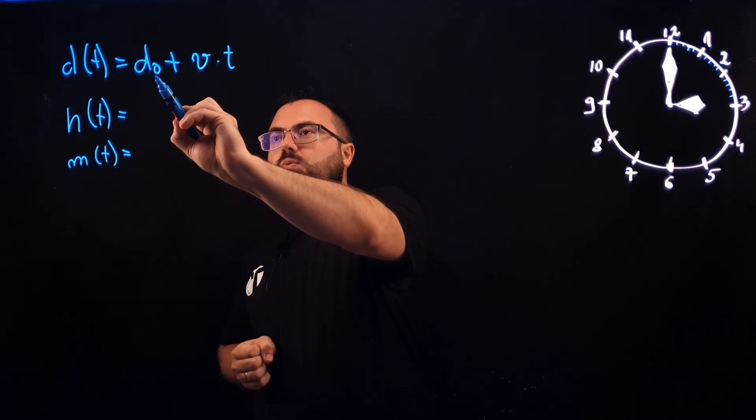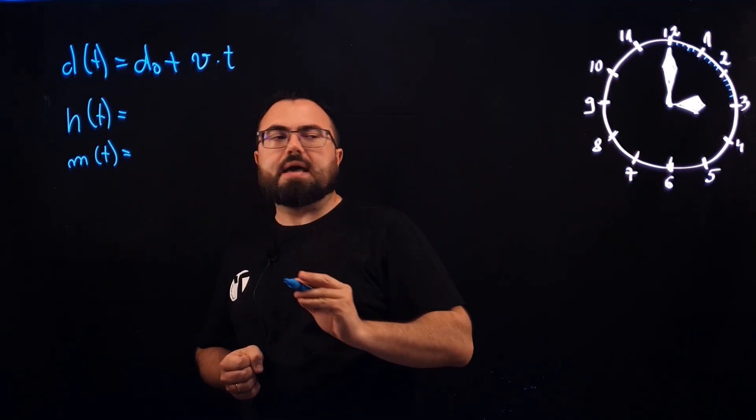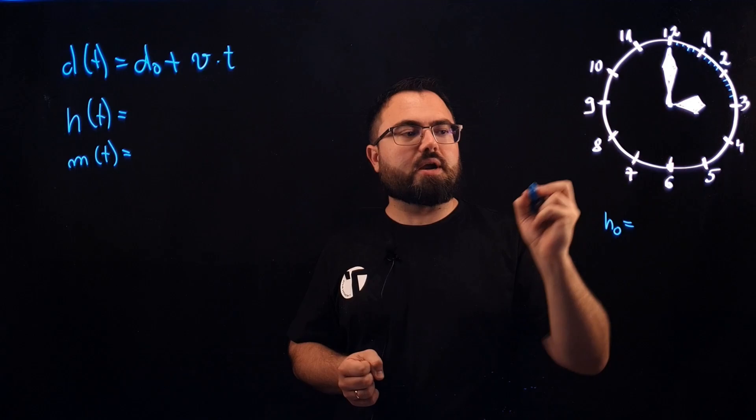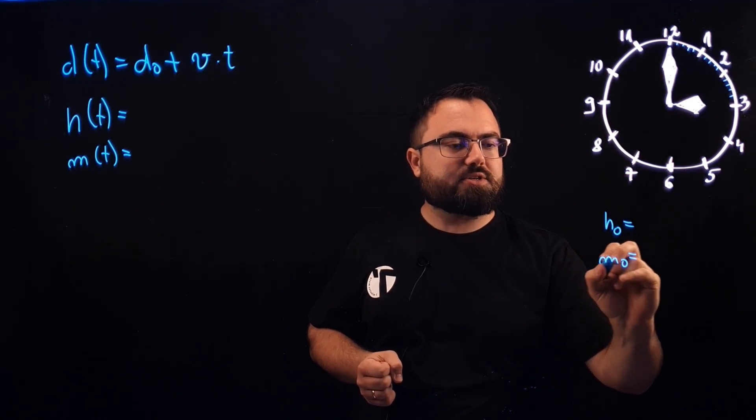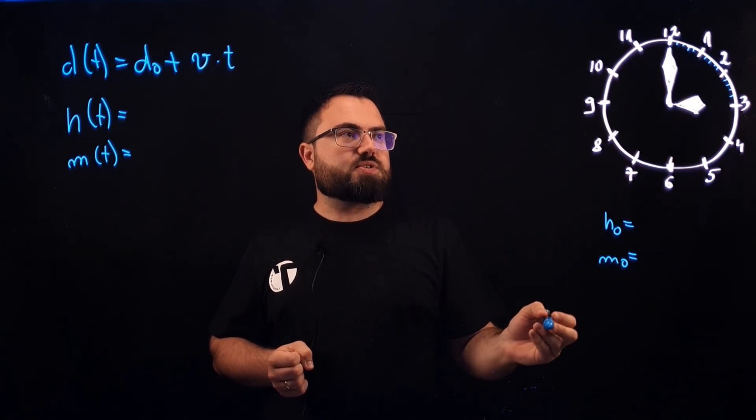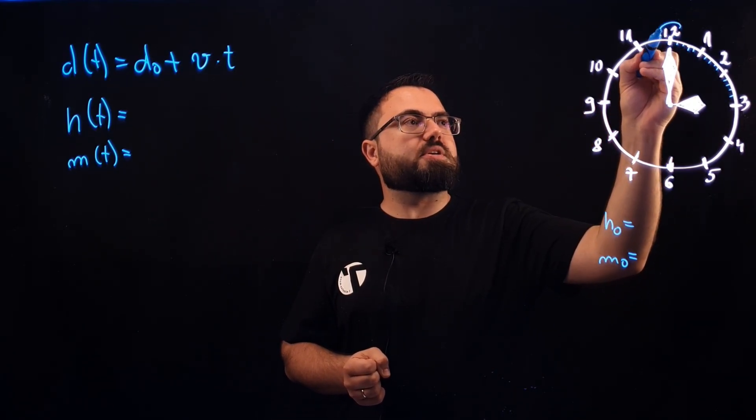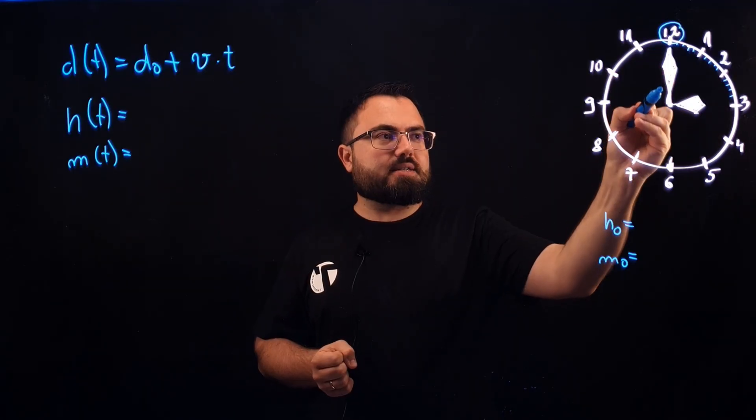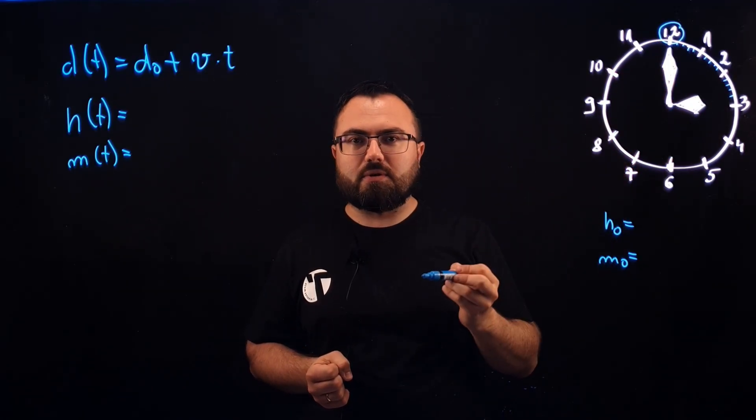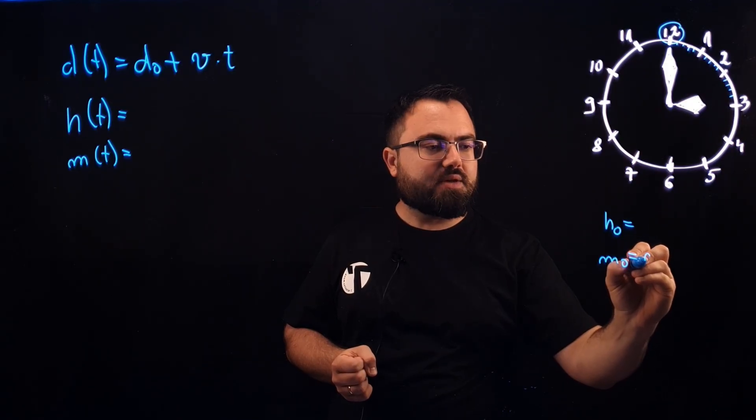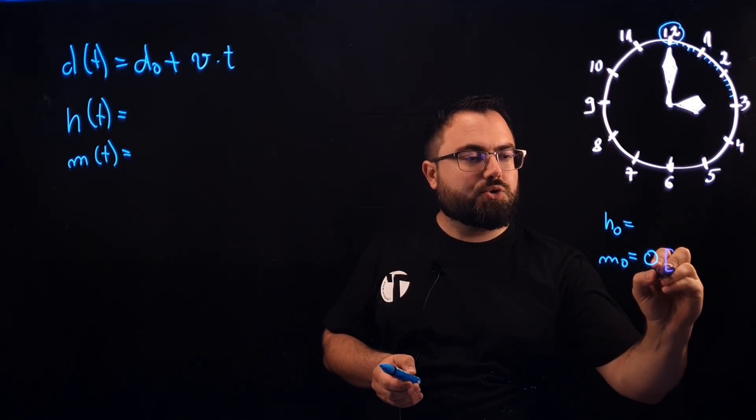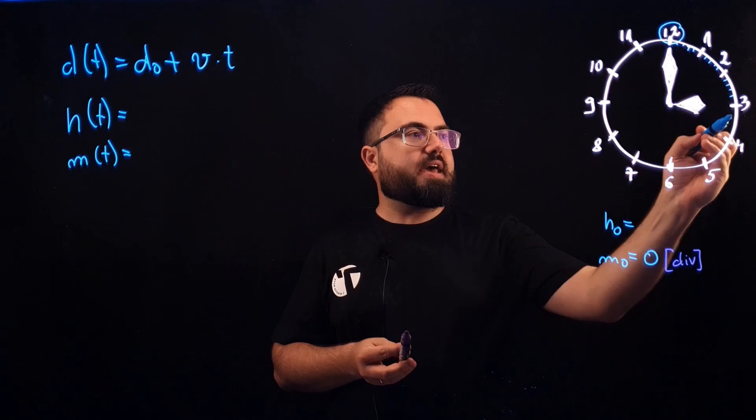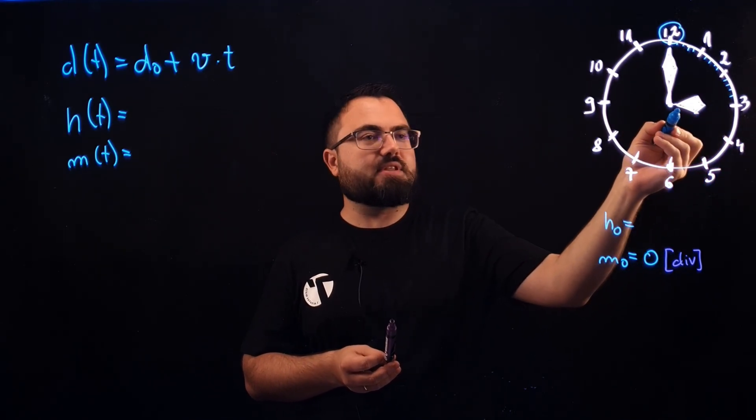And now we need to find out what is the offset of the h hand. We have h0 that's the offset of the hour hand and we have m0 that's the offset of the minute hand. The one with the minute is pretty simple because we will take 12 as our reference point and m0 because it starts exactly on the 12 will have the value 0. And the unit is divisions.